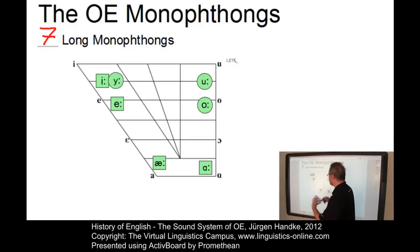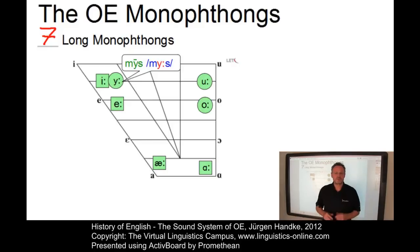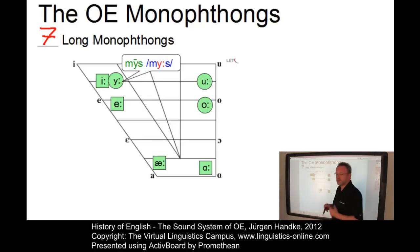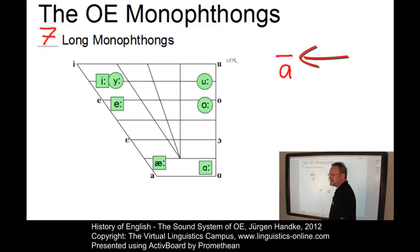And then a vowel which no longer exists in present-day English: the rounded high front vowel, long Ȳ as in 'mȳs', present-day English 'mice'. As you can see orthographically, these long monophthongs were all indicated by means of a macron on top of the vowel — this is the indication of vowel length in orthography.